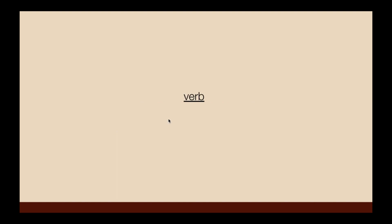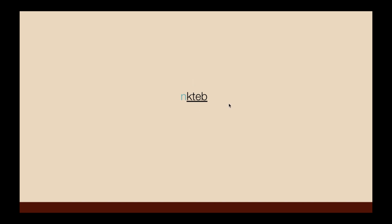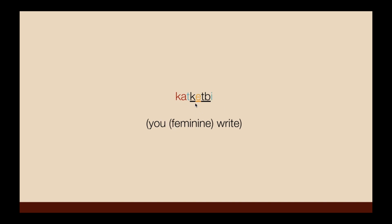In other words: verb, n-verb, ka-n-verb, I-verb, ka-verb. For example, with 'ktyb' (to write): n-ktb, ka-n-ktb, kat-ktb, kat-ktb.